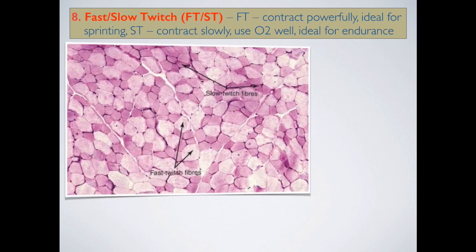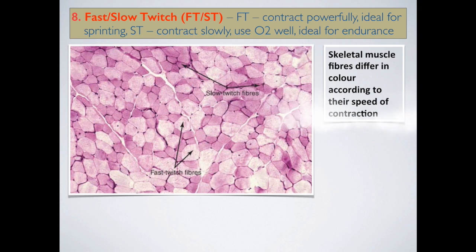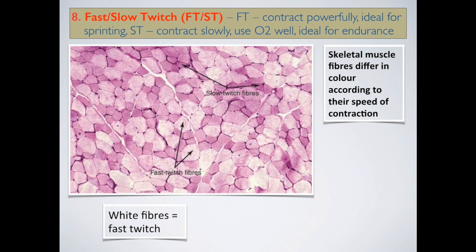Looking at this image, you can clearly see that slow twitch fibres and fast twitch fibres actually look a little bit different when part of the muscle. The slow twitch fibres are darker in colour and the fast twitch fibres are a little bit lighter. This is mainly due to the increased amount of myoglobin in the slow twitch muscle fibres. Myoglobin, very similar to haemoglobin, attaches to oxygen, so the darker, redder colour indicates that there is more oxygen and myoglobin present in those fibres.